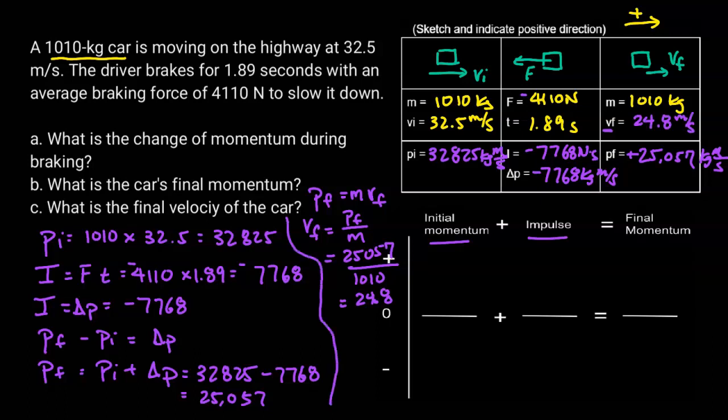The next step is going to be the bar chart. This is just a qualitative bar graph. I'm going to draw a bar at about 32,825 for the initial momentum, and then a bar for 7,768 representing the impulse — which is a bit smaller.